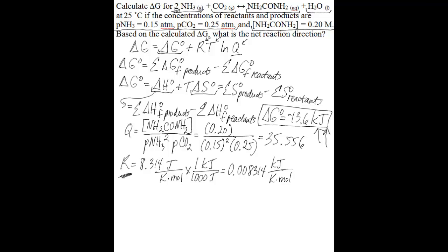The last conversion needed is temperature. You're given 25 degrees Celsius, but you must convert to Kelvins for the equation. Temperature in Kelvins equals degrees Celsius plus 273.15, so 25 plus 273.15 gives 298.15 Kelvins. Now that you have all the terms, substitute them into the equation.